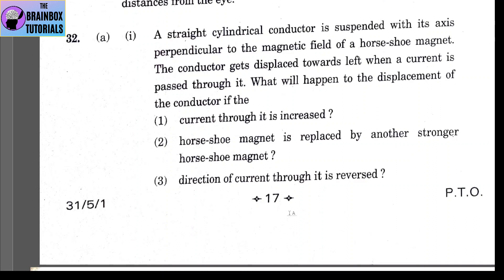Number 2: if the horseshoe magnet is replaced by a stronger one, the force on the conductor increases because force is directly proportional to the magnetic field, so displacement increases again. Number 3: if the direction of current through the conductor is reversed, the displacement is also reversed — the conductor now gets displaced towards the right.